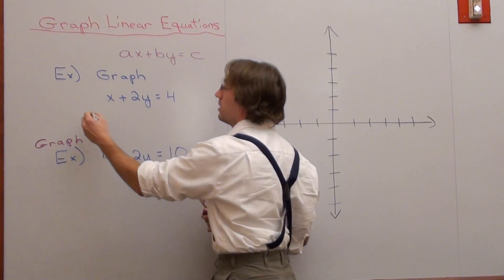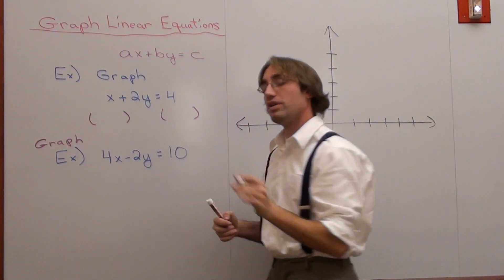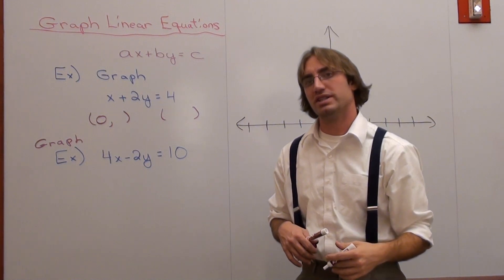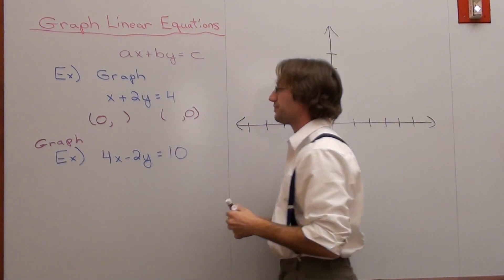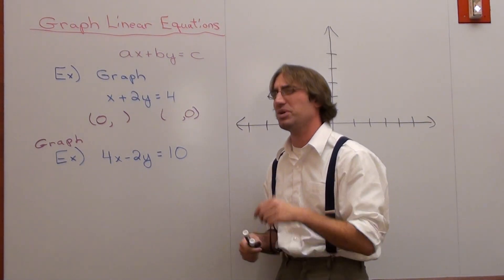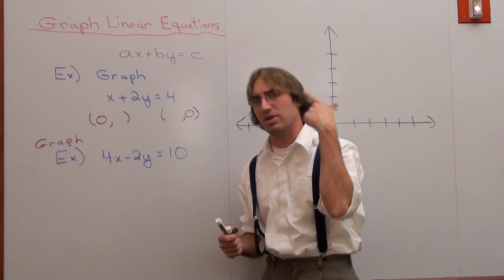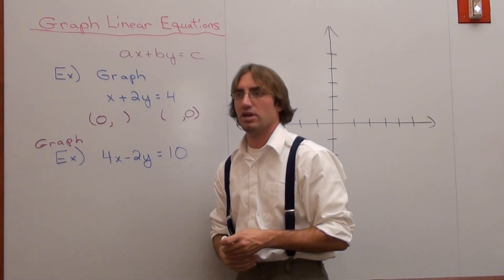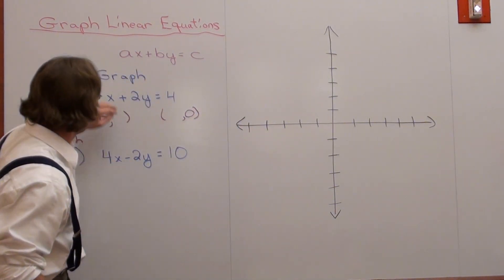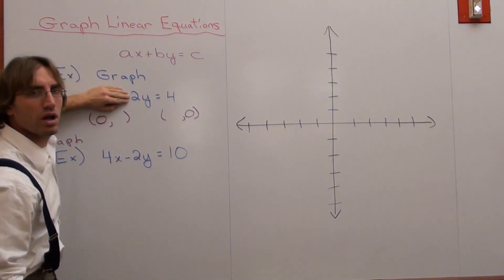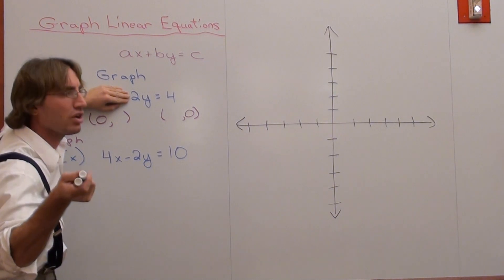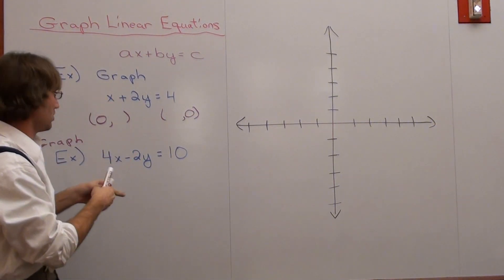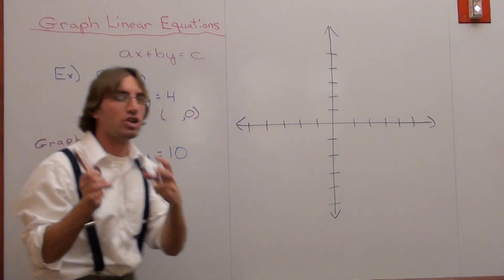Basically, we're going to find the x-intercept and the y-intercept of the graph. We're going to create two points: on one of the points, we set x equal to 0, and on the other, we set y equal to 0. Here's what my teacher did — she covered up the x term and said 2y equals 4. So 2 times what number equals 4? Divide by 2 on both sides: y equals 2. So one of my points is (0, 2).